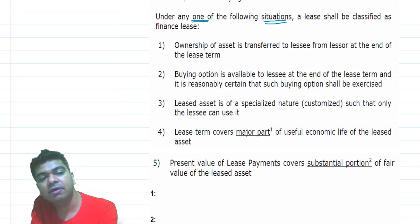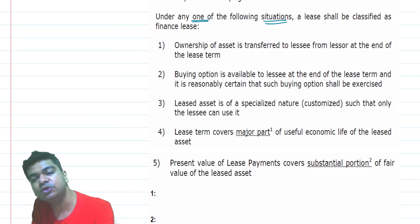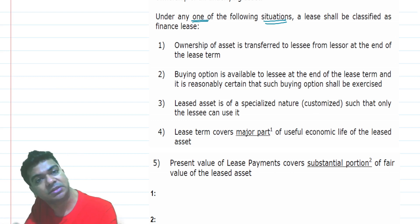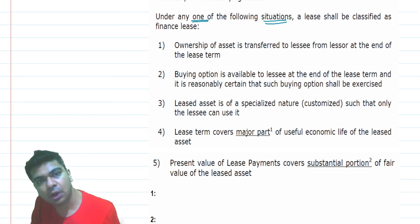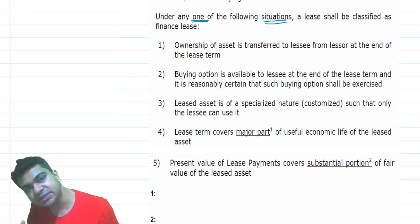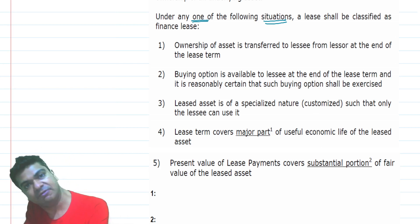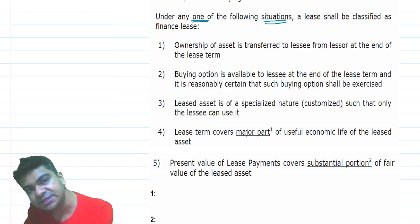If you closely analyze this, ownership of the asset is transferred to the lessee from the lessor at the end of the lease term — this looks very much like a hire purchase transaction. In a hire purchase transaction, you pay the last installment and you become the owner of the asset. So hire purchase transactions will basically be considered as finance lease as far as Ind AS 116 is concerned.